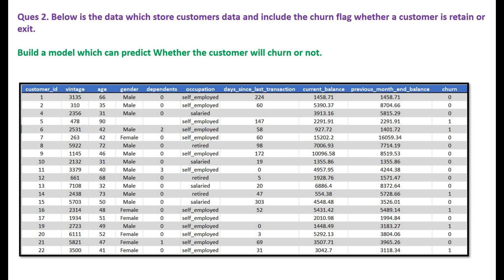Some kind of a score — something which can say there is an 80% or 85% chance this customer might churn in the coming months — so that it can help the business partners, finance team, or sales team to take timely action and save the customers from getting churned, because no company wants to lose their customers.